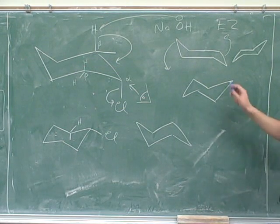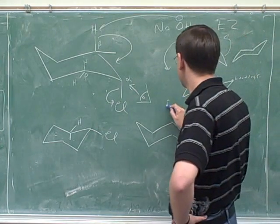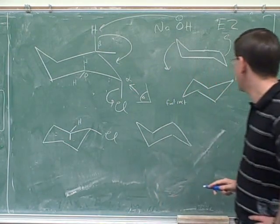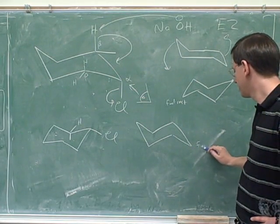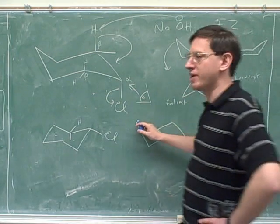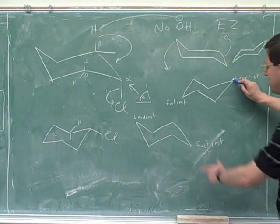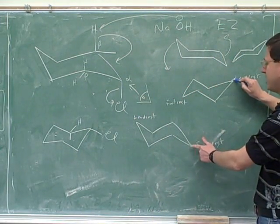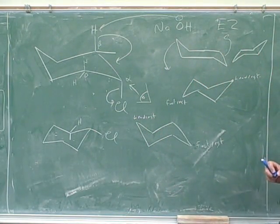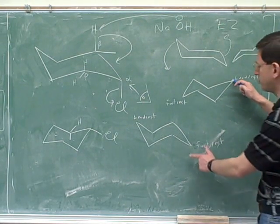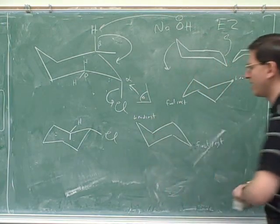Notice what we're doing when we go from one chair to the other. This point is the headrest and this point is the footrest. If we do a chair flip, we take the headrest and make it into the footrest pointing down, and we take the footrest and make it into the headrest. The key thing to keep in mind is that these are the same carbon — it just went from head to foot. Keep your eye on the rightmost and leftmost carbons because they're the same in both pictures.